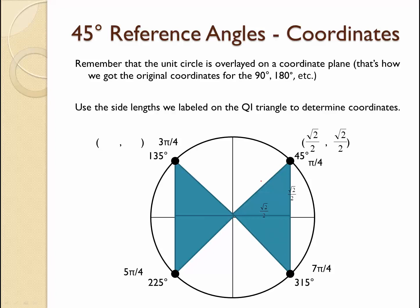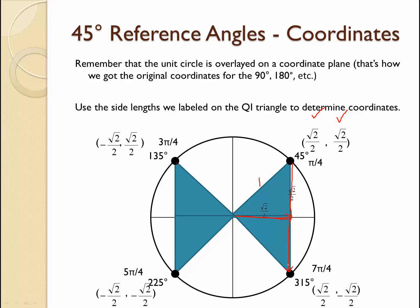Now let's label the coordinate points. We know the hypotenuse is 1, and both legs are √2/2, so this point is (√2/2, √2/2). The coordinate going left and up is (-√2/2, √2/2). The coordinate going left and down is (-√2/2, -√2/2). And the coordinate going right and down is (√2/2, -√2/2). The correct coordinates are on the slide, so please make sure you copy them correctly.